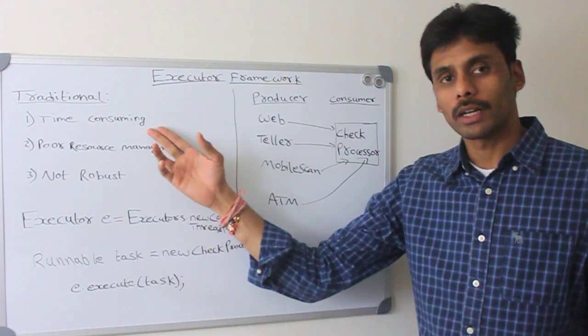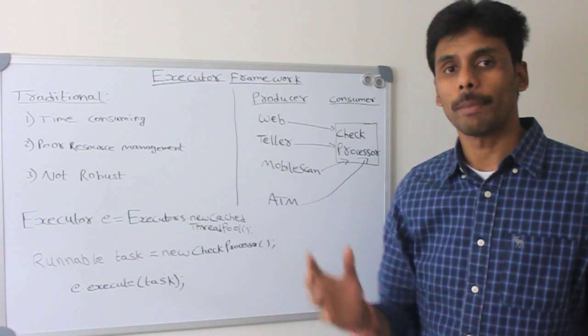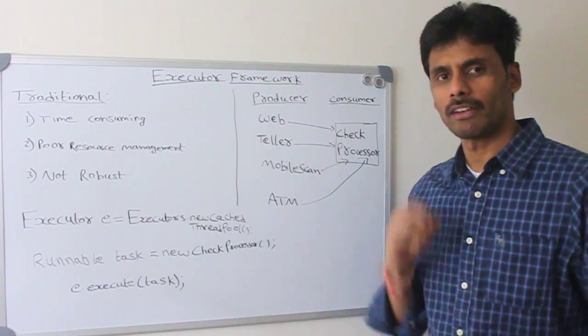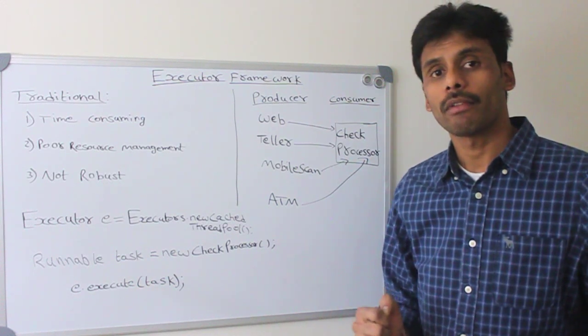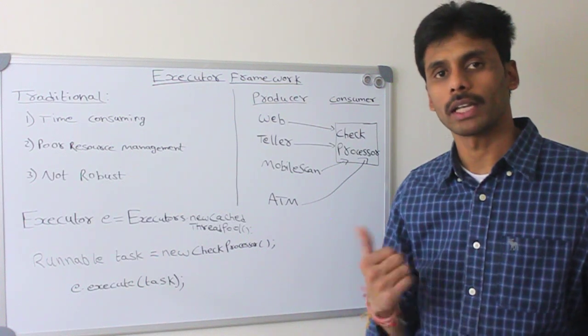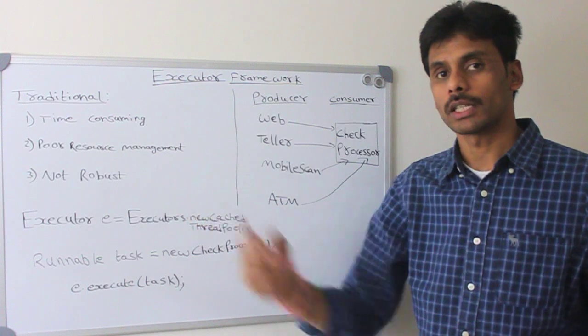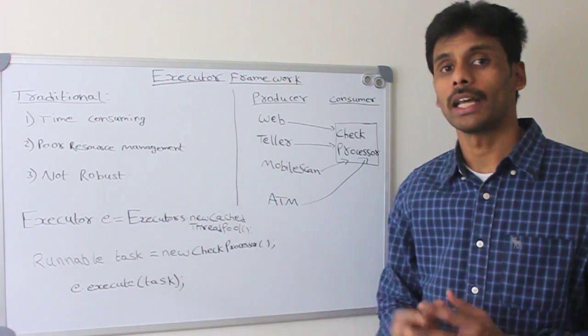So we improve the performance because there are worker threads ready waiting for the checks to come in and they will process them as soon as they come in. At the same time, we don't have a lot of threads out there. We can define how many threads we want to create. We can set an upper bound on that so that we will not waste a lot of system resources and we will not crash.